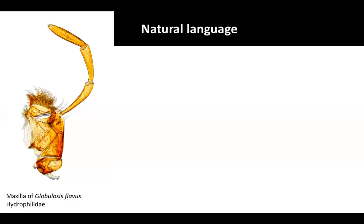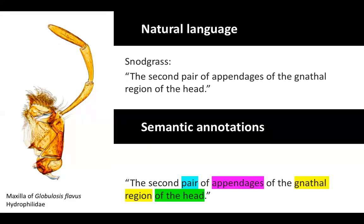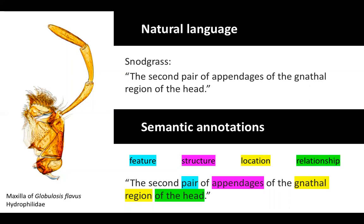Part of the annotation process involves taking our natural language definitions and using semantic annotations by defining terms and relationships. For example, we have a maxilla, which according to Snodgrass is defined as the second pair of appendages of the gnatal region of the head. Using semantic annotations, we can indicate that the word appendage is a structure, the word paired refers to a feature of that structure, the term gnatal region refers to a relative location, and the term off the head indicates a relationship — how this particular structure is related to the rest of the body.